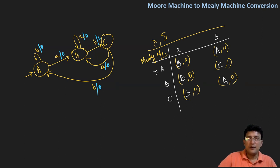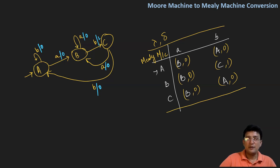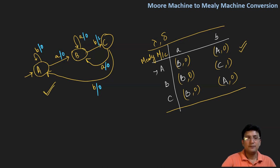I am repeating this again in every video: whenever you are writing this question in your university examination, along with drawing the diagram, you should also draw the transition table. Thanks for watching. In the next video, we will learn how to convert the Mealy machine to the Moore machine. Thanks for watching.